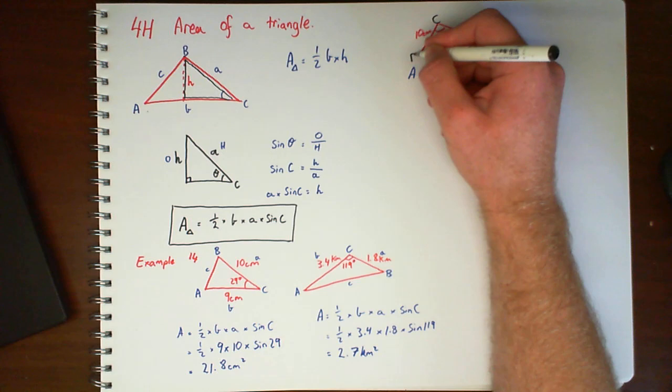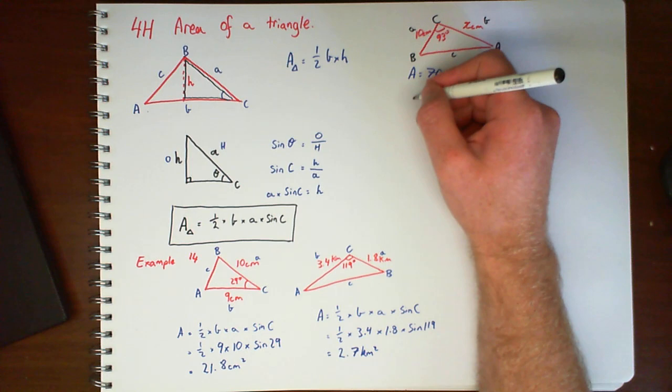So we've got C as the angle. A and B. Little a, little b.